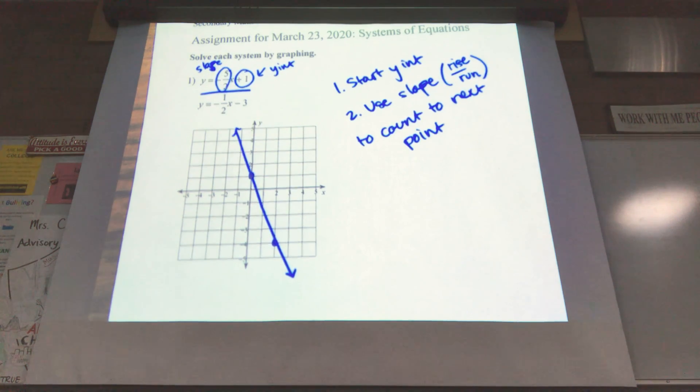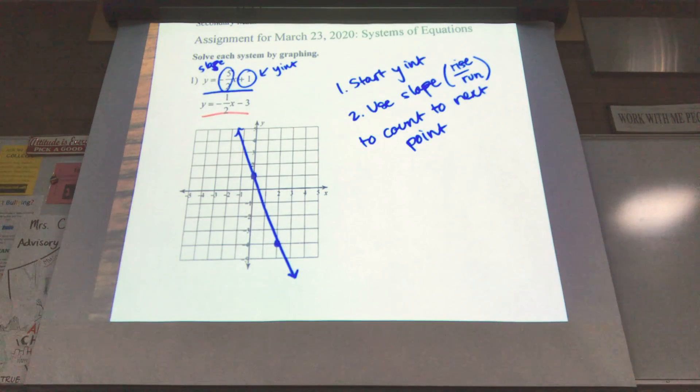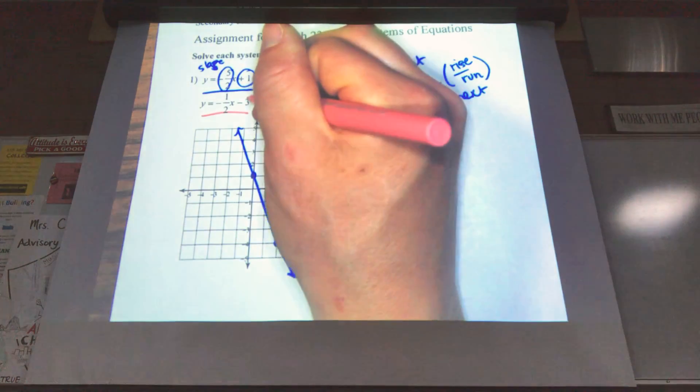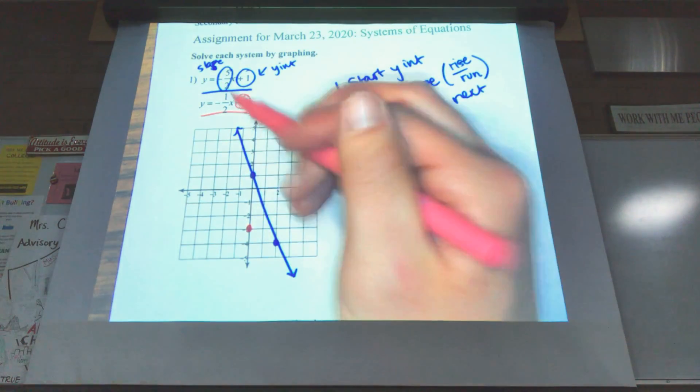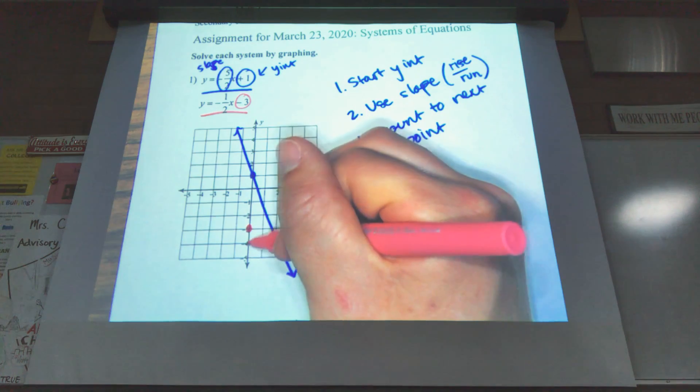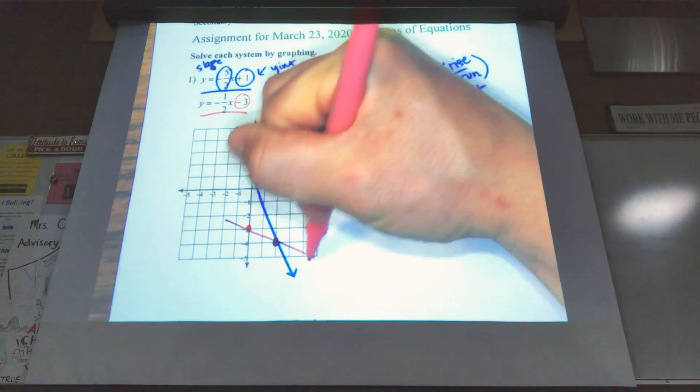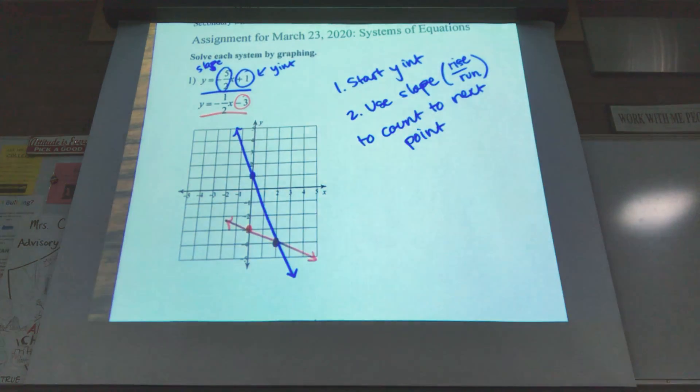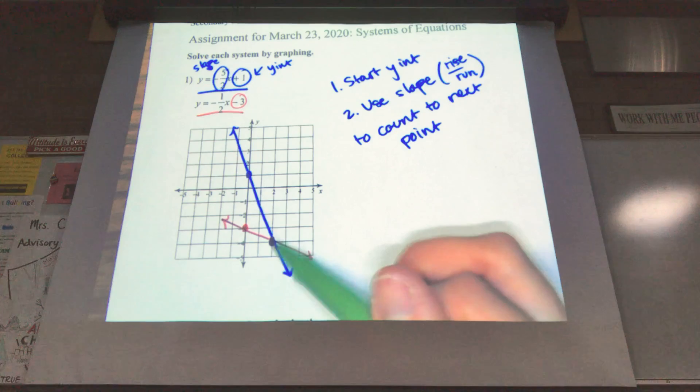Now we need to graph our second equation. Our pink equation. We're going to do it the same way. So I have my y-intercept, negative 3. So first point at negative 3. And then my slope at negative 1 half. So down 1 over 2. Easy peasy. We can see that they intersect right there. So our answer is where they actually intersect, this point that they meet.